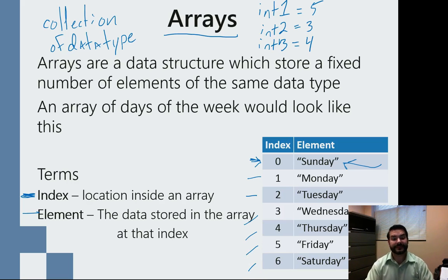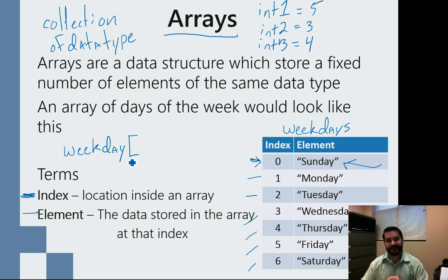And so now I could say, if let's say we call this weekdays. If I wanted to access any one of these particular days, I would say weekdays, and this is where we get a little logic side of things, square bracket. This is actually specifically designed for arrays.